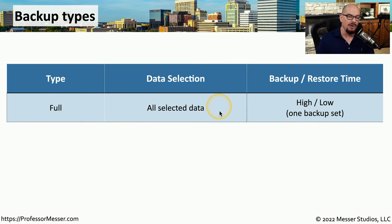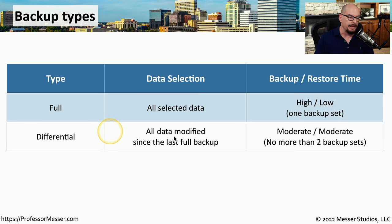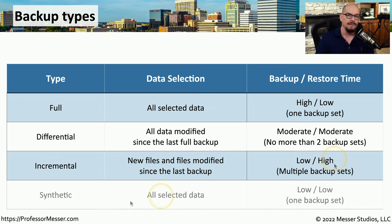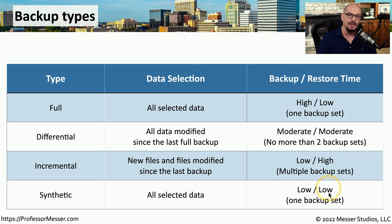To summarize: full backups copy all selected data on that system. This takes quite a bit of time but is very quick to restore because you only need the single backup set. With a differential backup, we're backing up all data modified since the last full backup each day. This means a moderate backup time as backups become larger each day, and a moderate restore time because you only need the last full backup and the last differential backup. The incremental backup backs up all new files and anything modified since the last incremental backup. The backup time is very low, but it has a high restore time because you need every incremental backup since the last full backup. With a synthetic full backup, you have a copy of all data on the system with low backup time using incremental backups daily, and low restore time because there's a single synthetic full backup set.